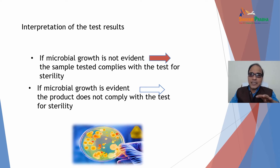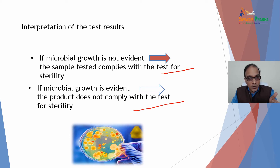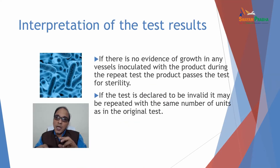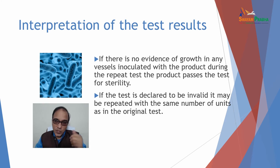Interpreting test results: if microbial growth is not evident, the sample tested complies with the test for sterility — it passes. If microbial growth is evident, the product does not comply with the test for sterility — it is not sterile. That's why we say it is an absolute term. If there is no evidence of growth in any vessel inoculated with the product during a repeat test, the product passes. If the test is declared invalid, it may be repeated with the same number of units as in the original test.